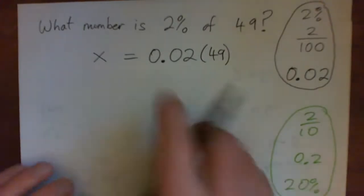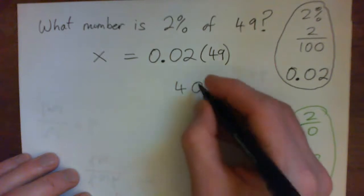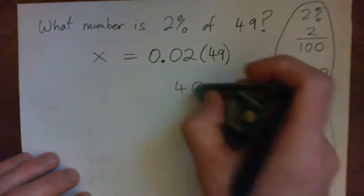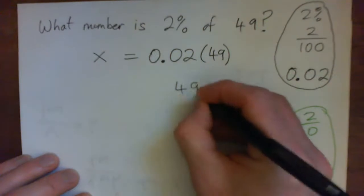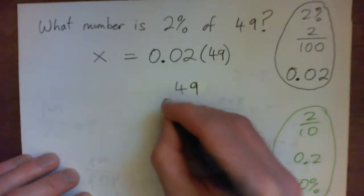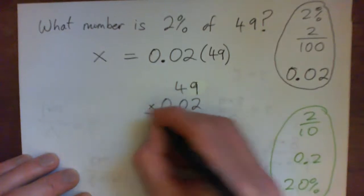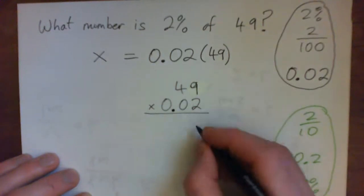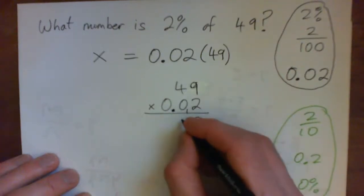So if I multiply this out, we'll get our answer. 49 times 0.02. 2 times 9, 18. Carry 1. 2 times 4 is 8, and 1 is 9.